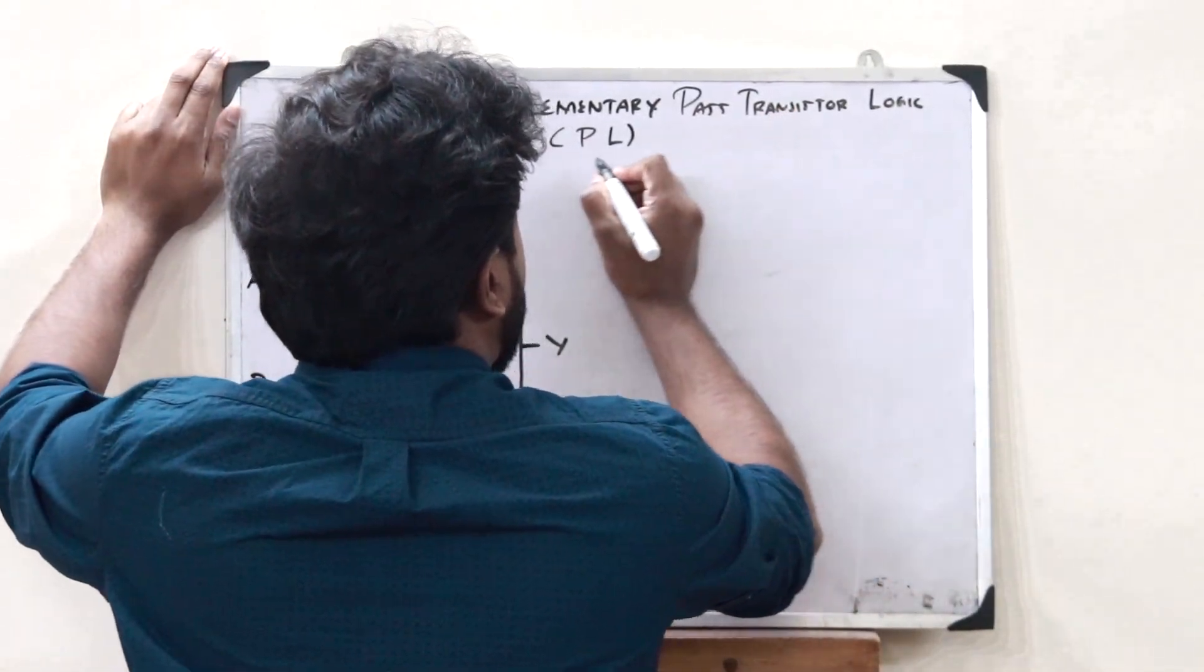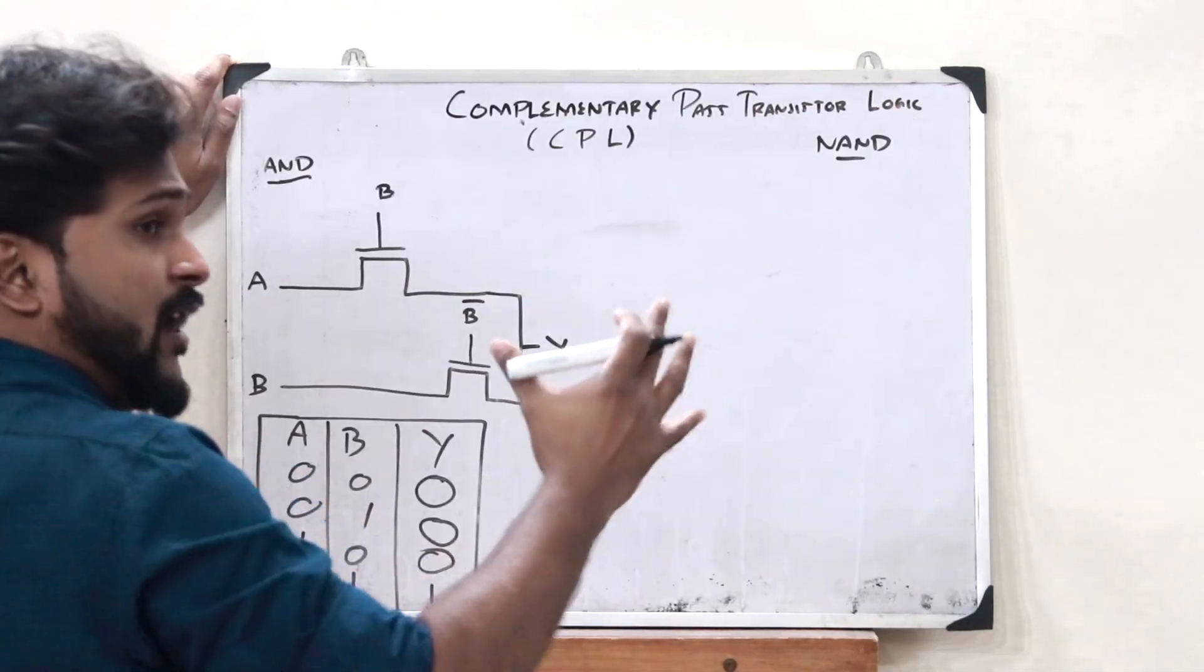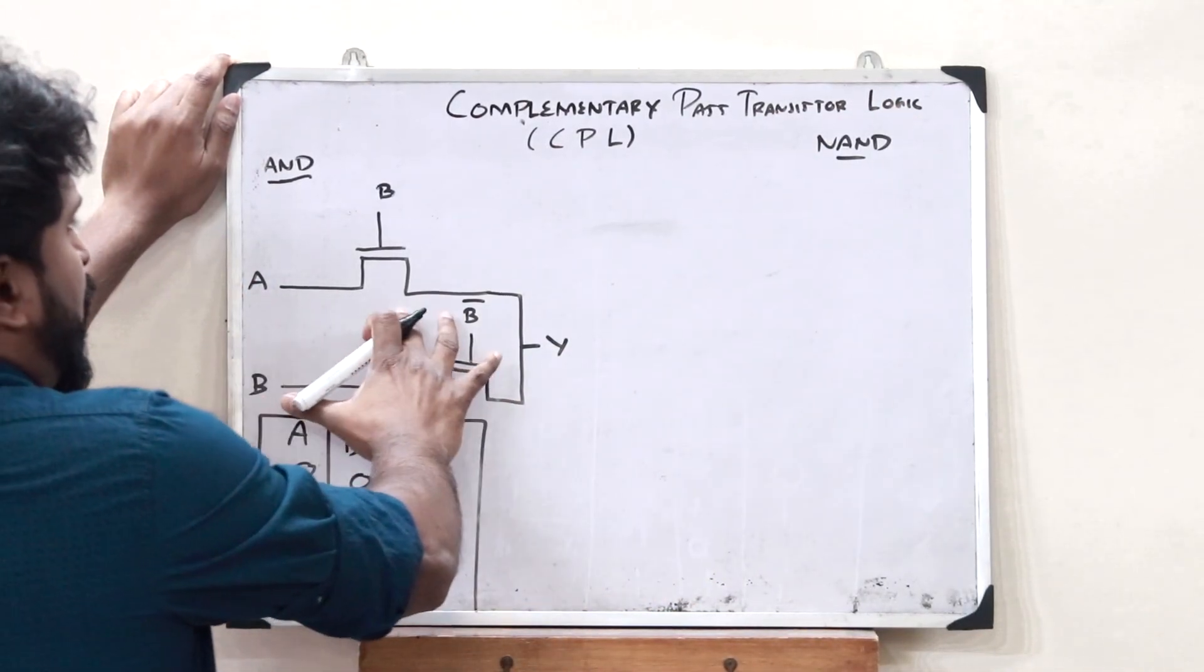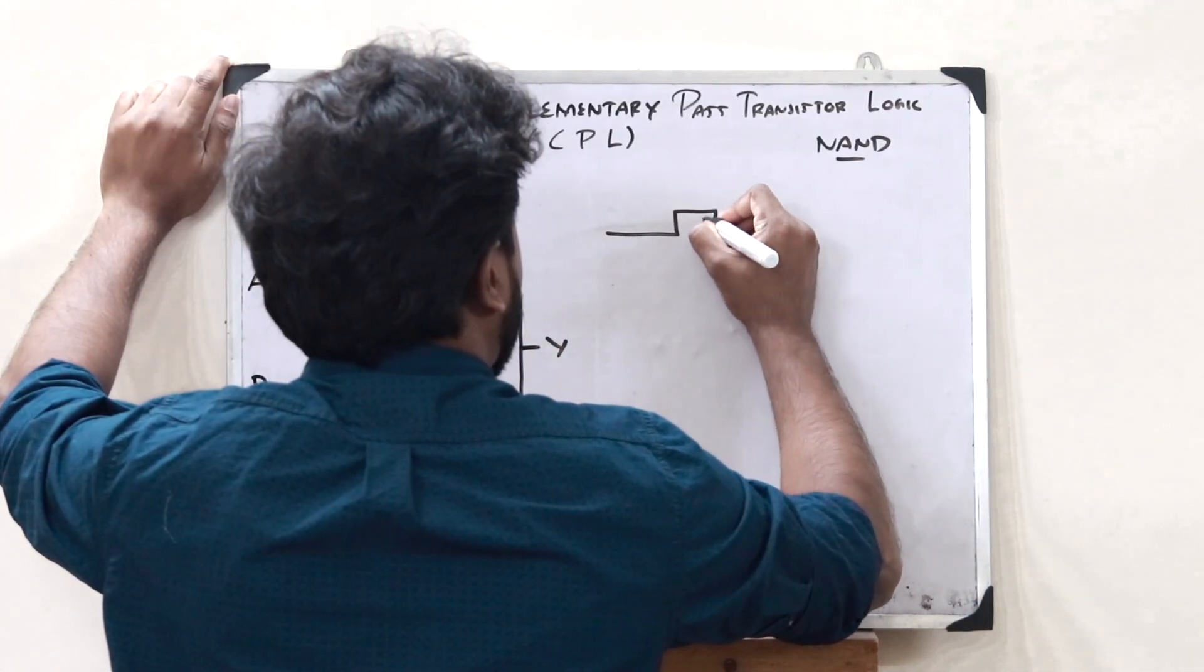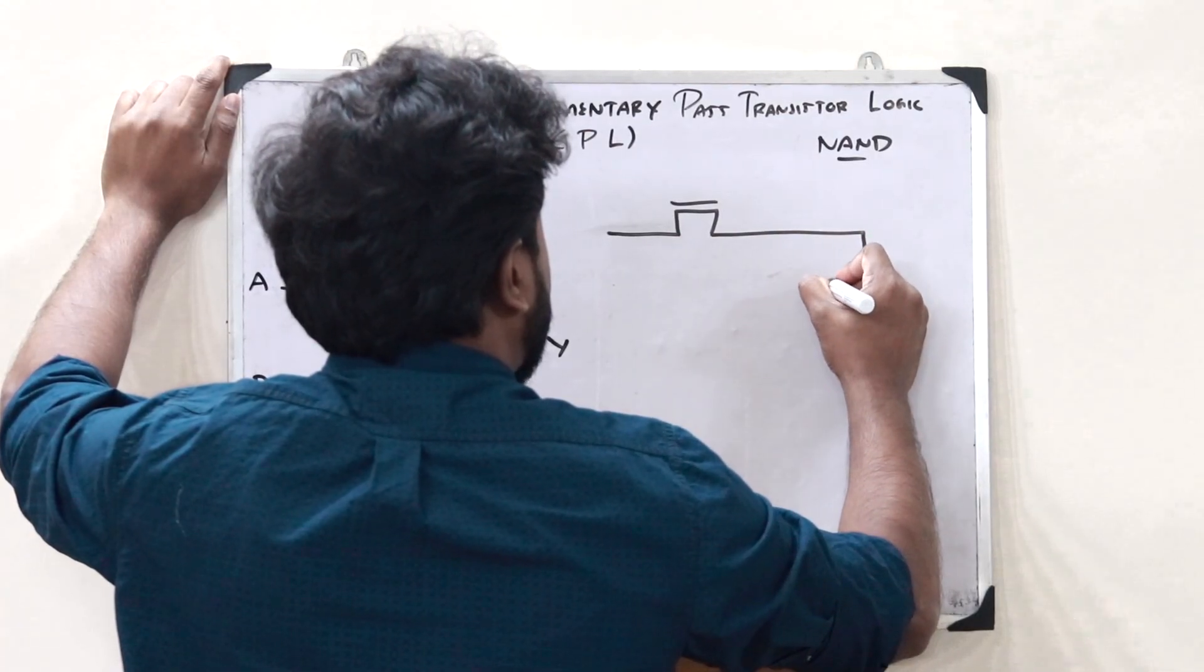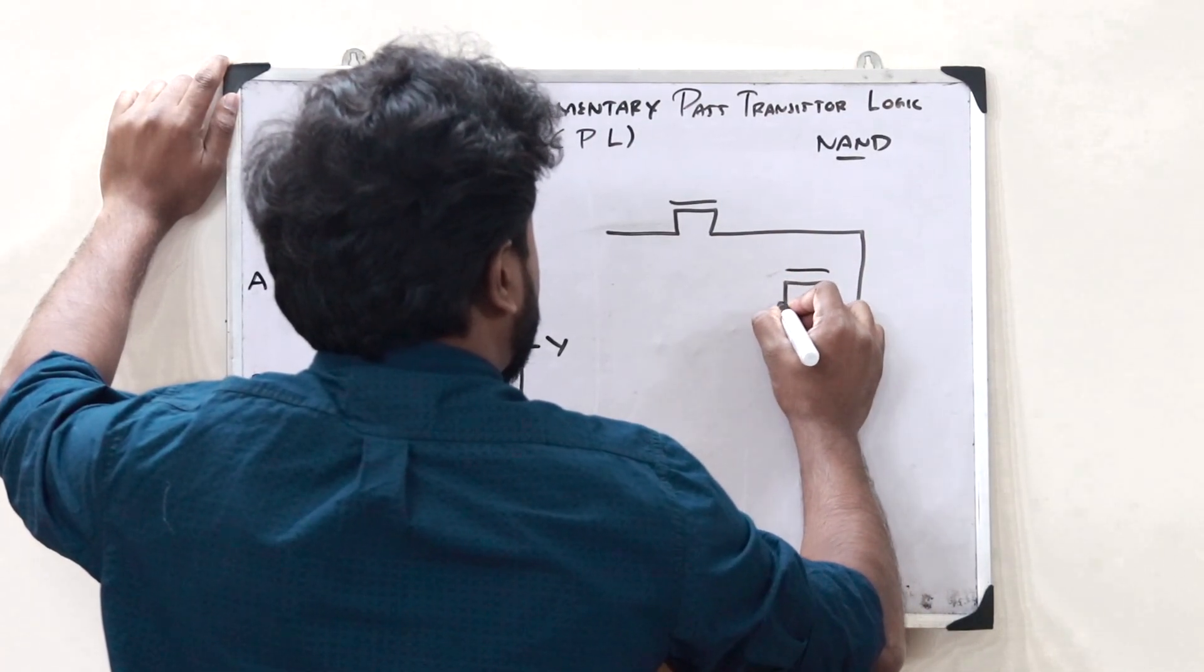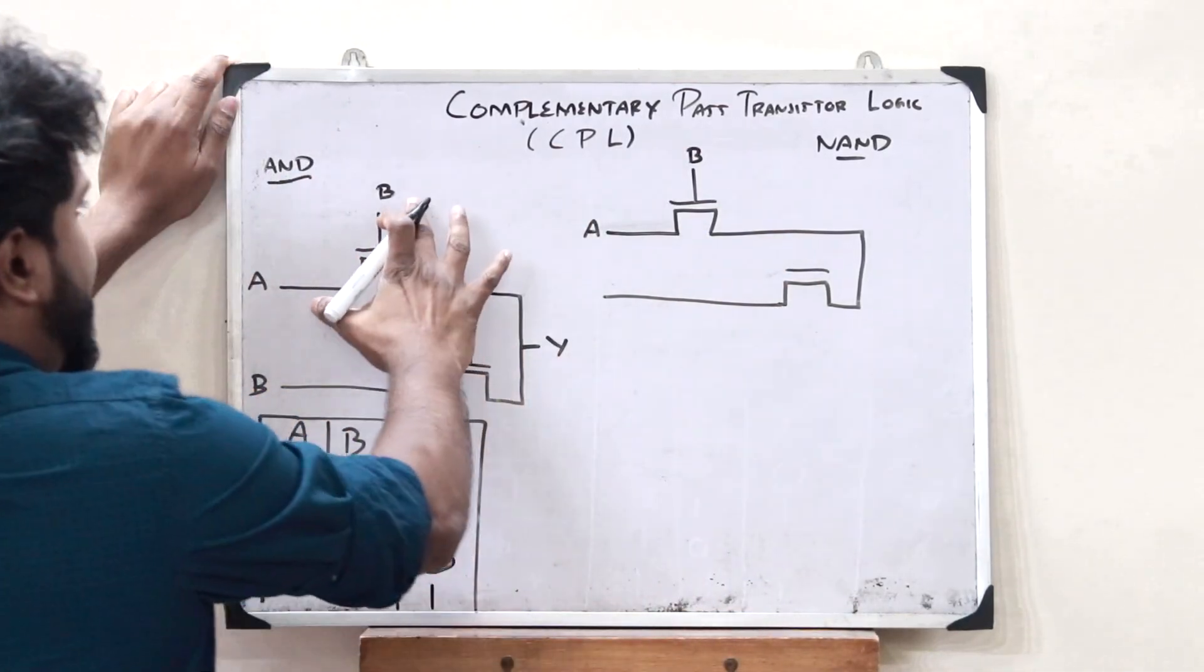Let us now construct a complementary pass transistor logic for a NAND operation. So, here, first we would construct the circuit for the AND operation like this. So first, here we would have one pass transistor like this and then here we would have another pass transistor like this. So, here we know that this is A and this is B. Exactly like this.